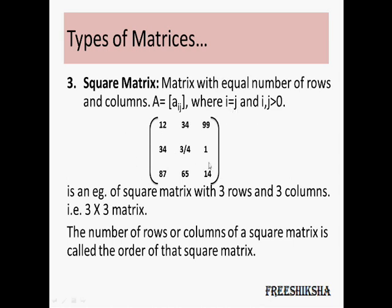Then you have a square matrix where your i is always equal to j, so the number of rows and the number of columns remain equal. It could be a 3×3 matrix or a 4×4 matrix.